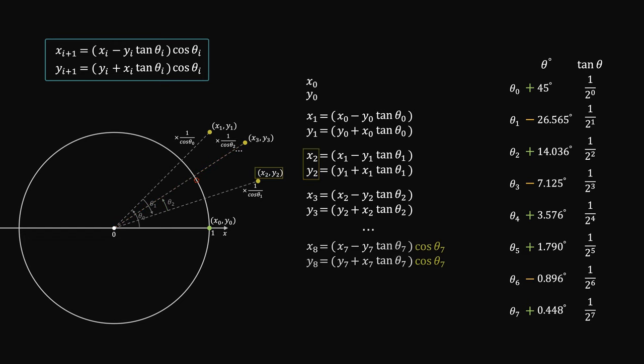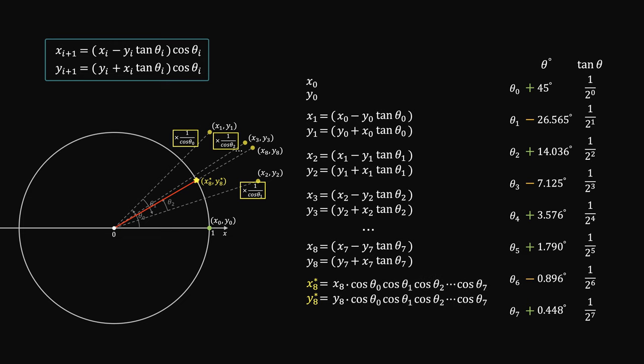So without the intermediate cosine multiplications, each step we're doing a scaled rotation. Since each step scales the coordinates by a factor of 1 over the cosine, in the end, we need to scale back all these cumulative factors, by multiplying the last coordinates by the products of all the cosines.